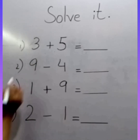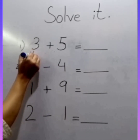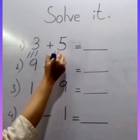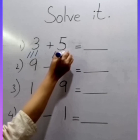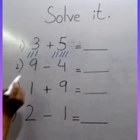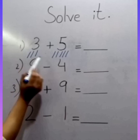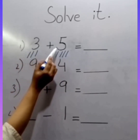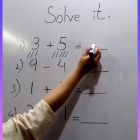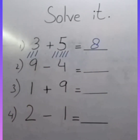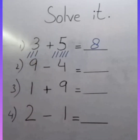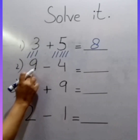Which number is this? This is number 3 — draw 3 lines: 1, 2, 3. And which number is this? 5 — draw 5 lines: 1, 2, 3, 4, 5. Now add them. Count with me: 1, 2, 3, 4, 5, 6, 7, 8. So 3 plus 5 equals 8.